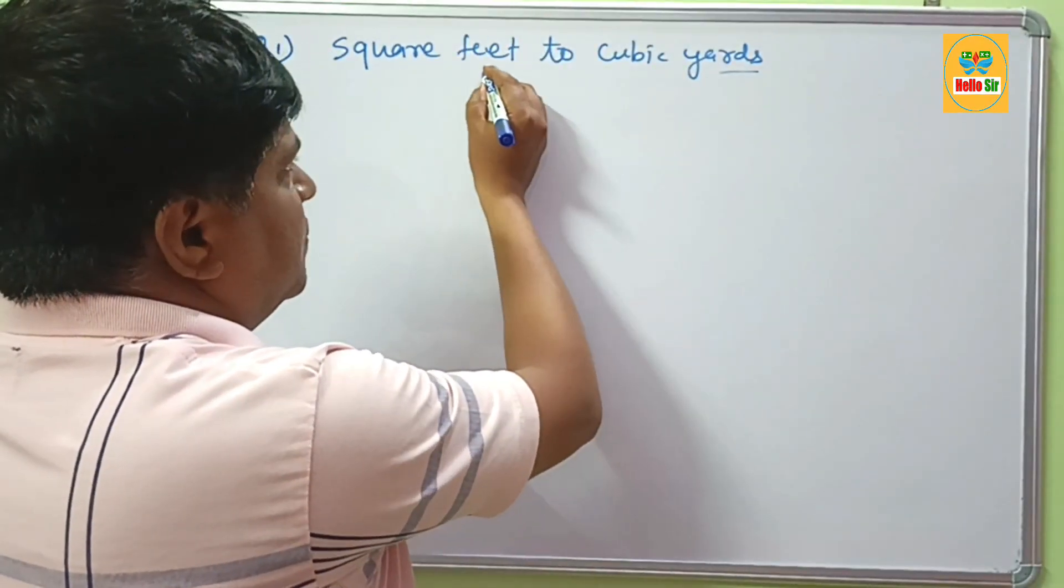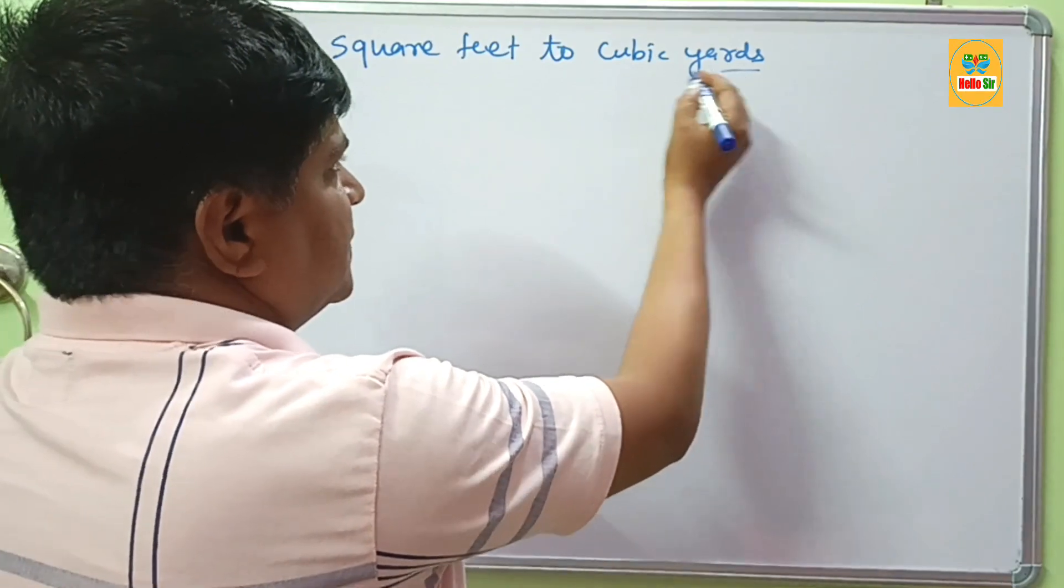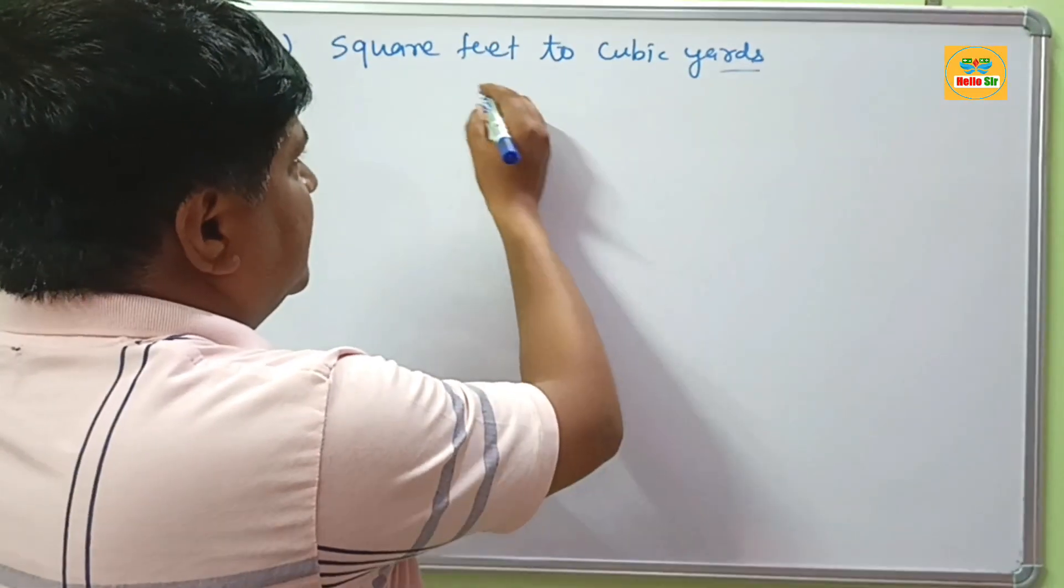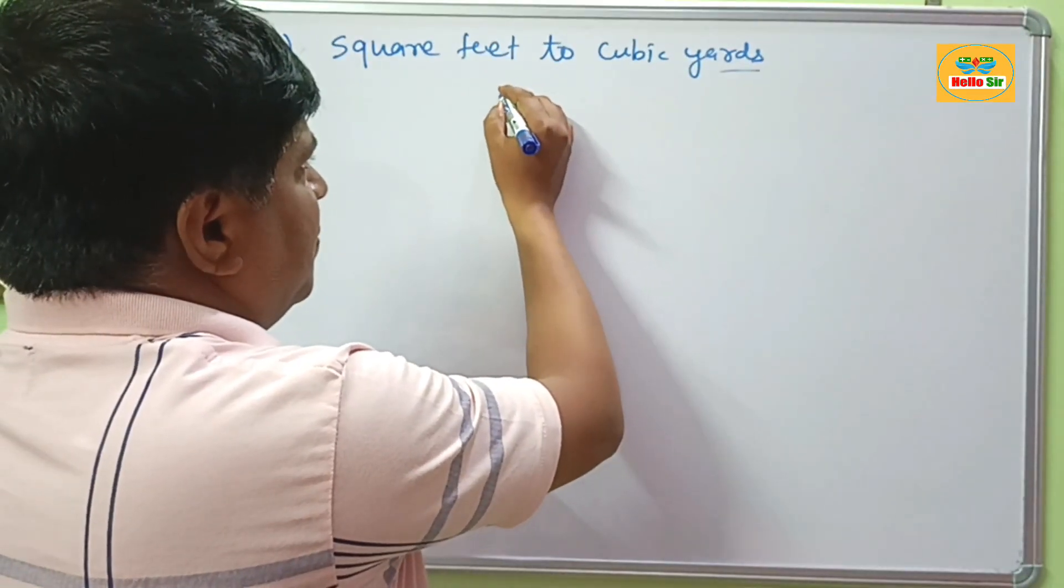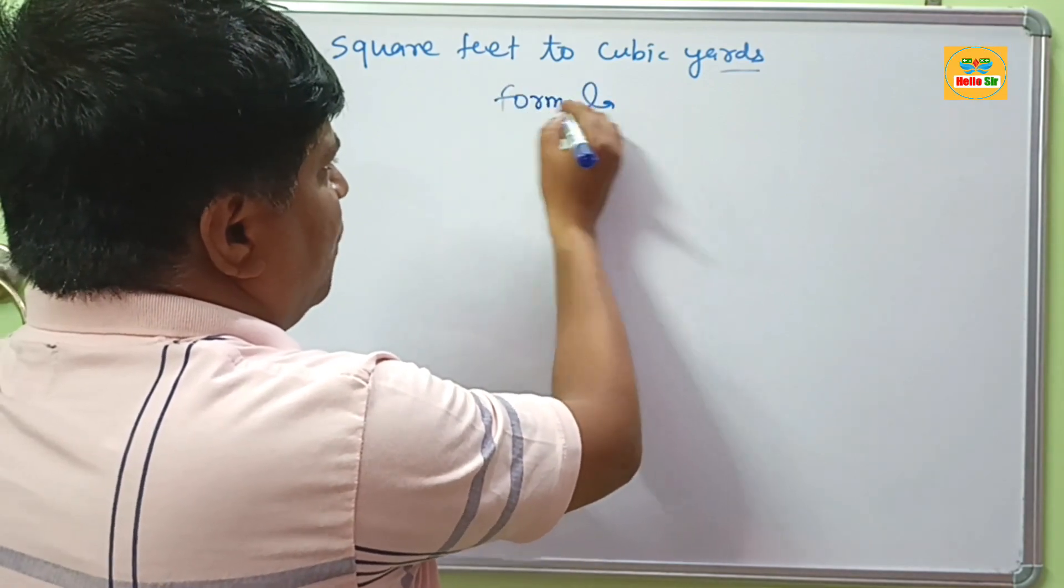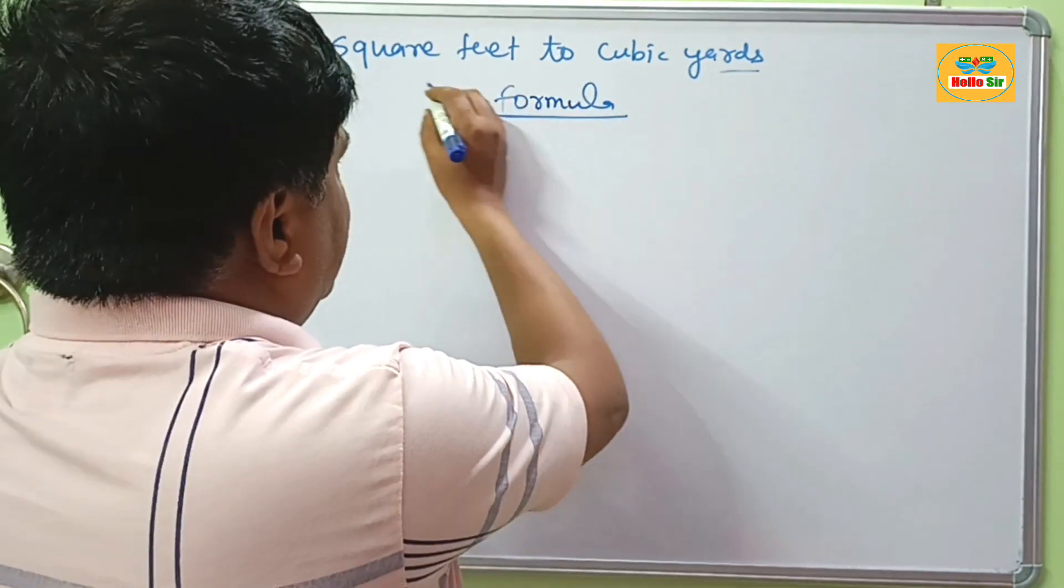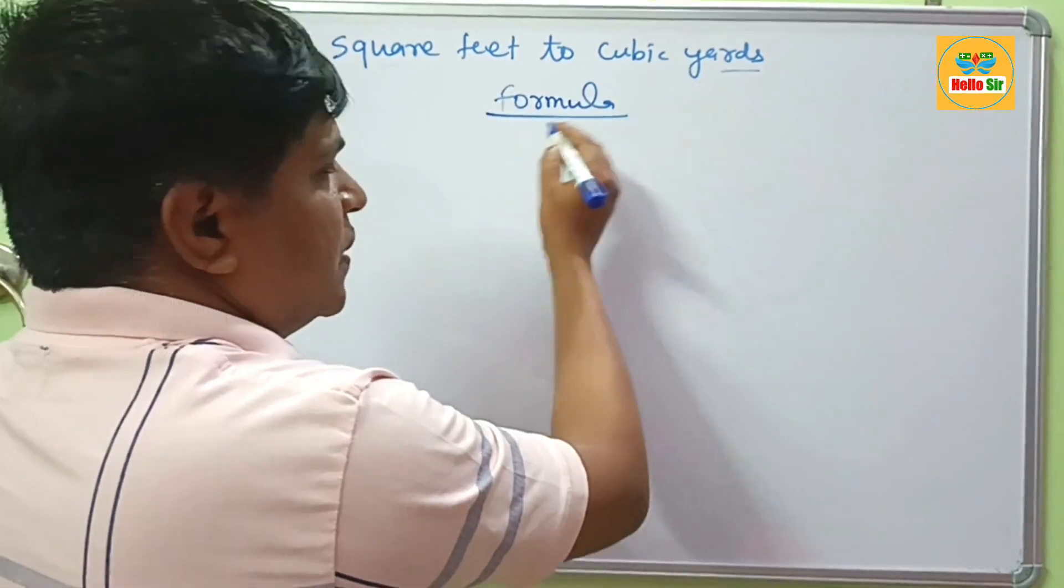It means the conversion of cubic feet to cubic yards. You can convert this by using a simple formula. What is the formula for the conversion of square feet to cubic yards?